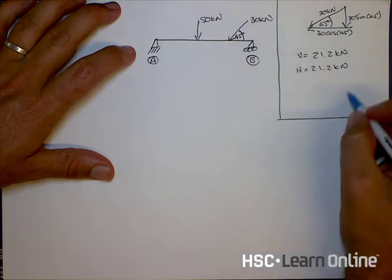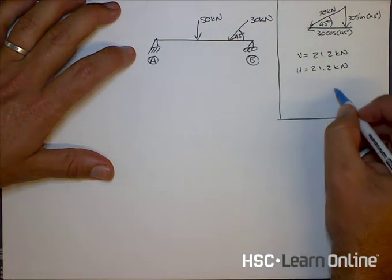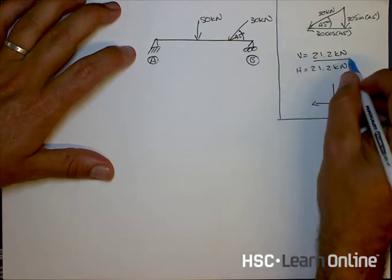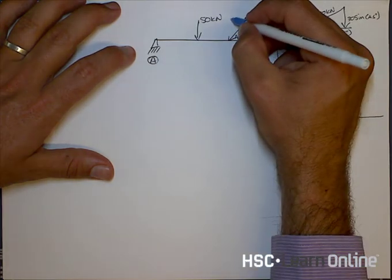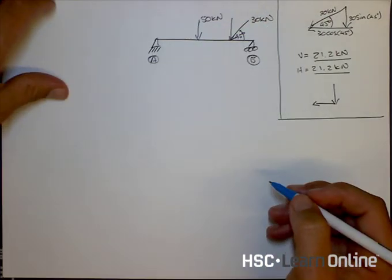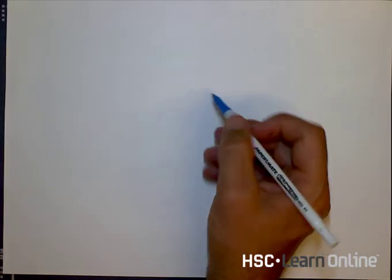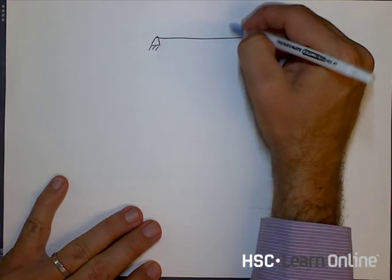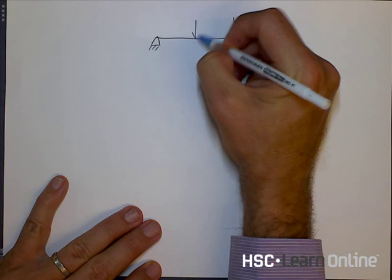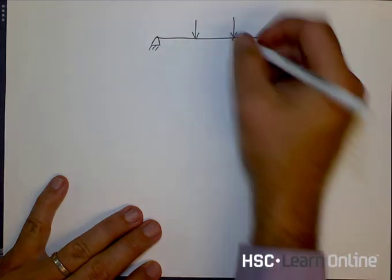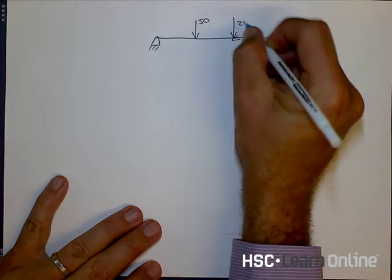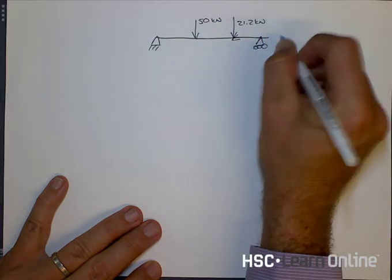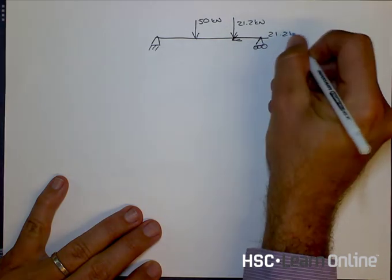So that's the first thing we've done is we've said that this 30 kilonewtons force can be replaced with a single force going down and a single force going across both with the values of 21 kilonewtons. So I'm just going to redraw that into my question. And in fact what I might do is I might just redraw the question as a whole instead of having an angular force, this is the one that was 50, 21.2 kilonewtons and 21 kilonewtons.